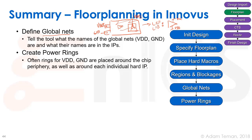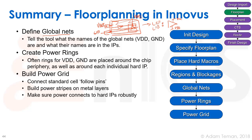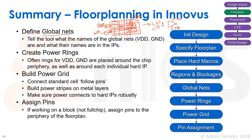Next, power rings are created — thick rings of VDD and ground around the design that are easy to connect to from external pads and to which stripes can easily connect. Then the power grid is built by placing VDD and ground stripes across the design with the necessary via stacks between layers. Finally, pins are assigned to the design, deciding where peripheral signals sit — at the full-chip level, this is determined by I/O placement.